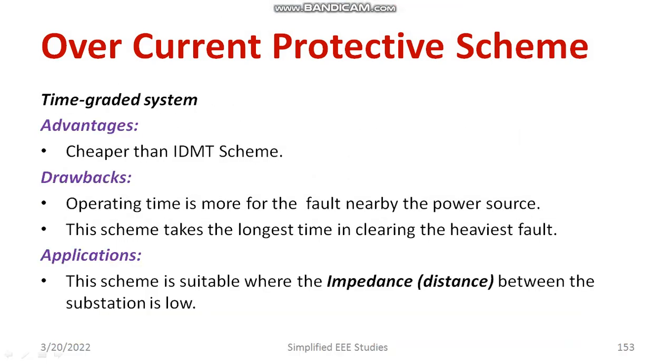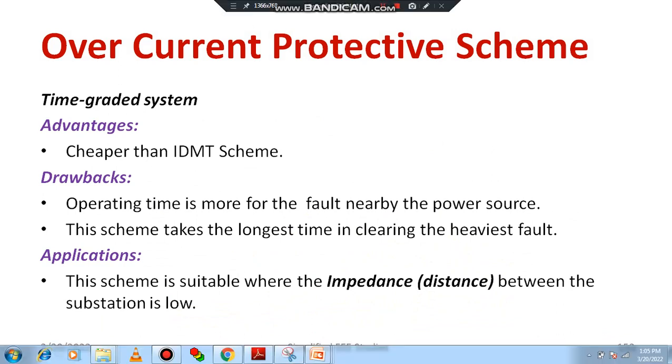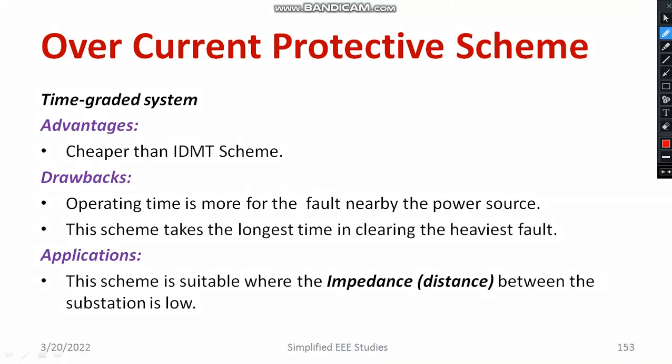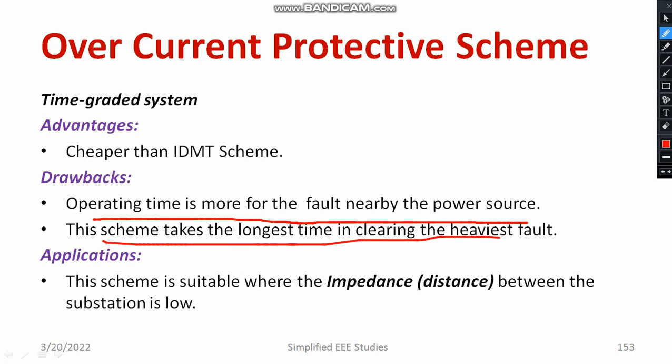Regarding the advantages: the system is much cheaper compared to inverse definite minimum time relays. The major disadvantages are that the operating time is more for faults nearby the power source — that is a major setback, because relay A which is nearest to the power source will operate last. This scheme takes the longest time to clear the heaviest fault, which is also not acceptable. These are the major disadvantages of the time graded system.